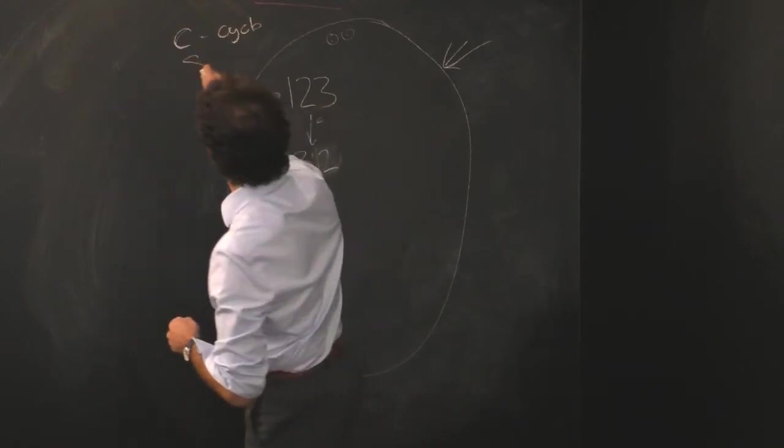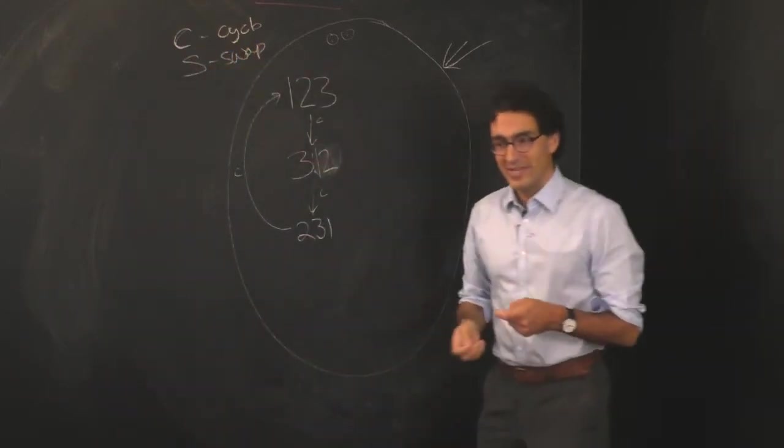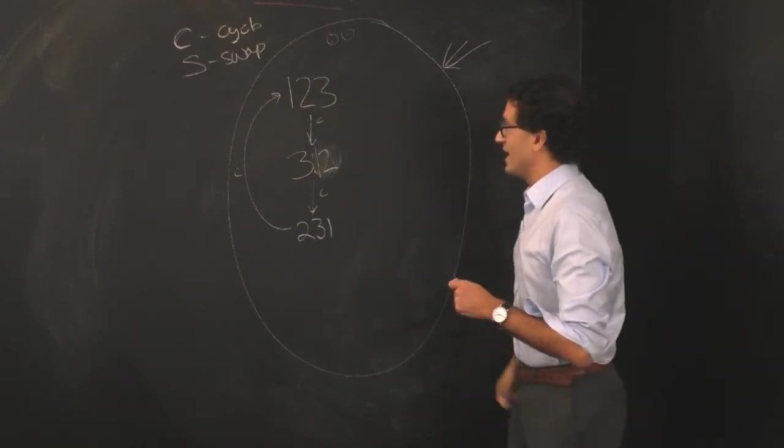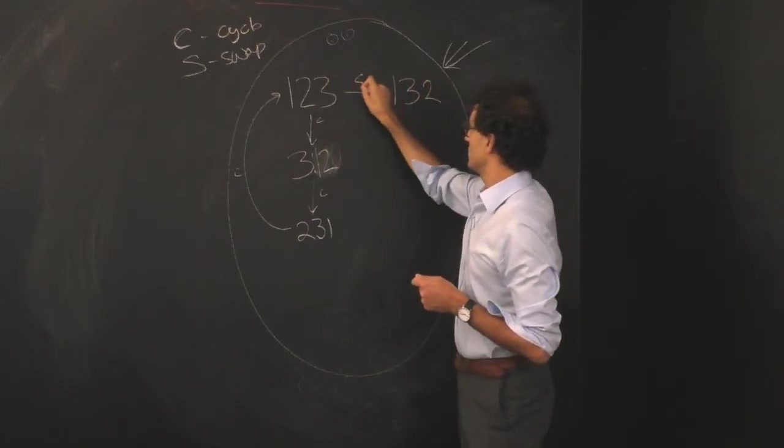S for swap. And what the swap operation does is it just takes two cards on the bottom and switches them. So it takes one, two, three, that sequence, to two, one, three. That's the swap operation.